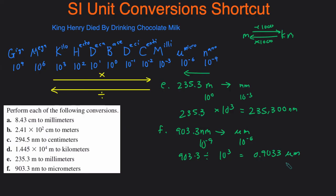And that's the shortcut for SI unit conversion. First, have the SI prefixes memorized. Next, find the absolute difference between the exponents of the unit you're starting with and the unit you're converting to. Then, if you're going to the right on the prefix scale, multiply; if you're going to the left, divide.